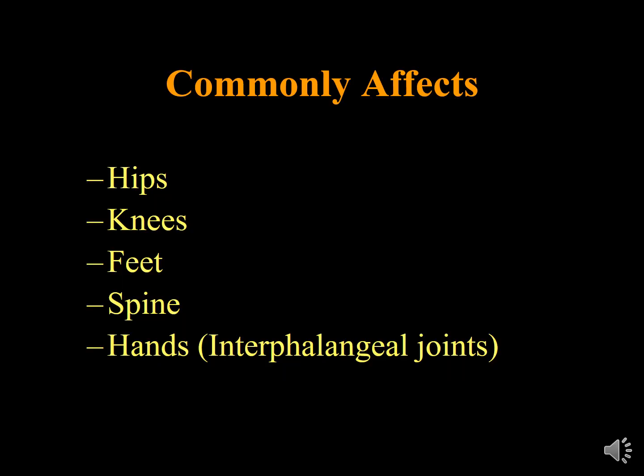Osteoarthritis commonly affects hips, knees, feet, spine, and hands. By far, knee Osteoarthritis is the most common form. When we talk about Osteoarthritis, we generally mean knee Osteoarthritis. Joints that are typically NOT affected by Osteoarthritis include the shoulder, wrist, elbow, metacarpophalangeal joints — which are affected by rheumatoid arthritis but not Osteoarthritis — and the temporomandibular and sacroiliac joints.